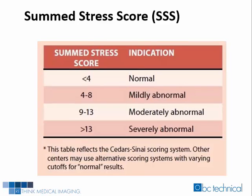A summed stress score in the normal range indicates an area of normal perfusion, while higher summed stress scores reflect greater extent and severity of perfusion defects during the stress study. A summed stress score less than 4 indicates a normal area of perfusion defect. A summed stress score of 9 through 13 indicates a moderately abnormal area of perfusion. And a summed stress score greater than 13 indicates a severely abnormal area of perfusion.